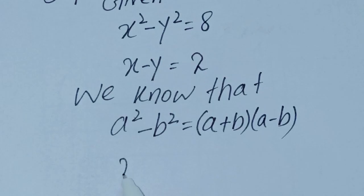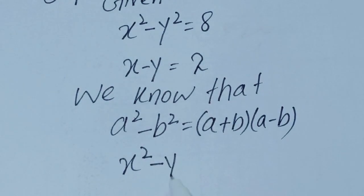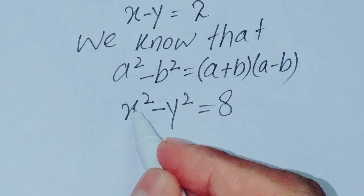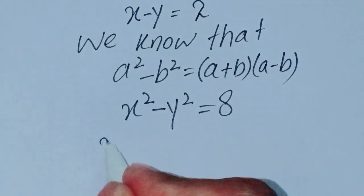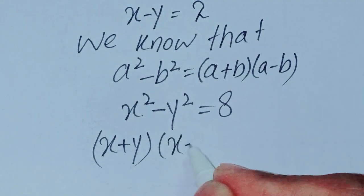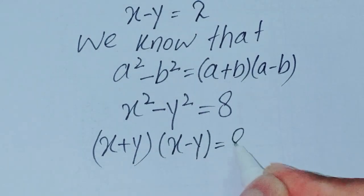Now we can write it: x squared minus y squared is equal to 8. So as a squared minus b squared, we can write it as x plus y into x minus y is equal to 8.